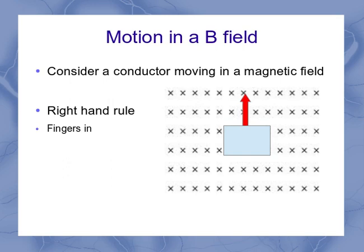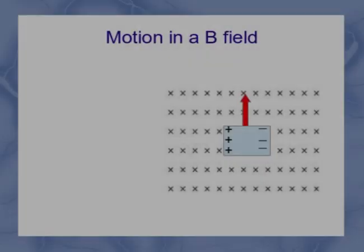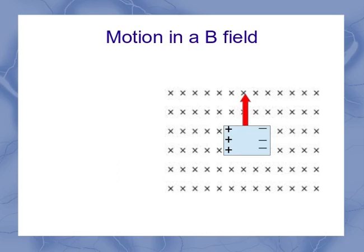Your fingers are going to point in to the screen, because that's the magnetic field. Your thumb is going to point upwards. And that means the palm of your hand is going to face left. You'll want to actually put your hand up here to make sure you understand this. That means the positive charges would be forced to the left. Of course, in a conductor, we know that it's really the electrons moving to the other side, leaving some positive voids. So now I've got this conductor moving through a magnetic field, and that's caused charges to separate.